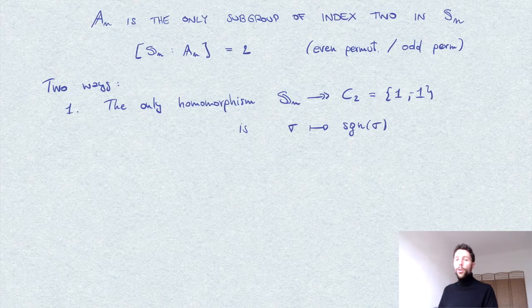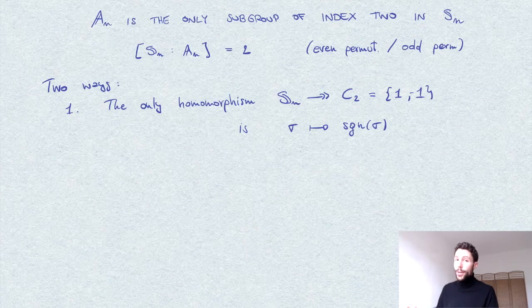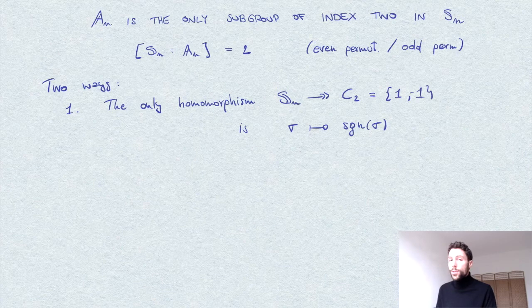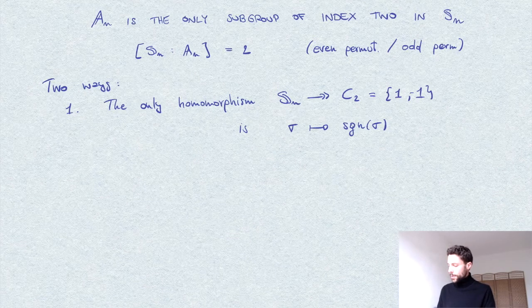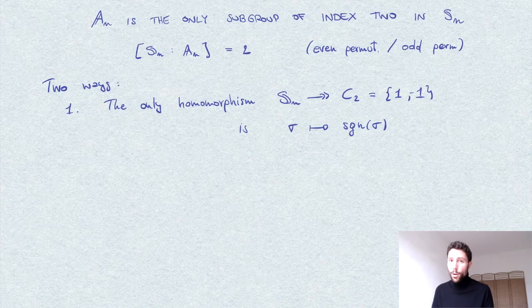The homomorphism that assigns to a permutation sigma its parity. In other words, precisely the parity of the number of transpositions needed to write sigma as a product of transpositions. This is clearly a homomorphism and there are no other surjective homomorphisms.